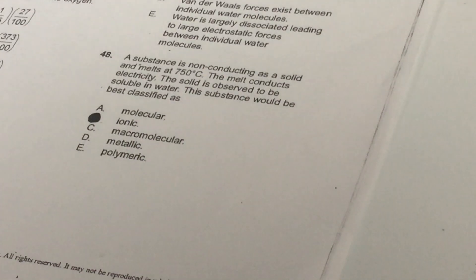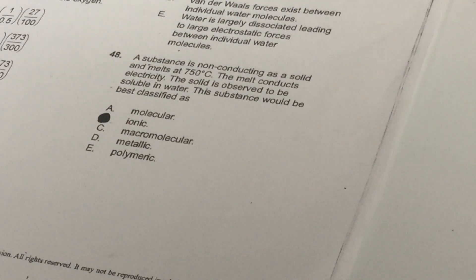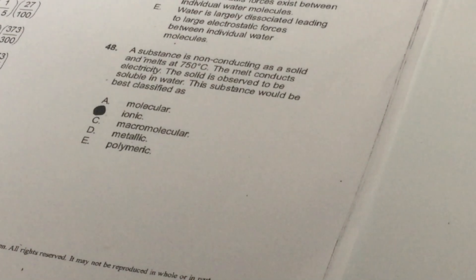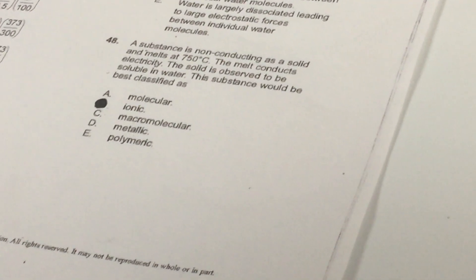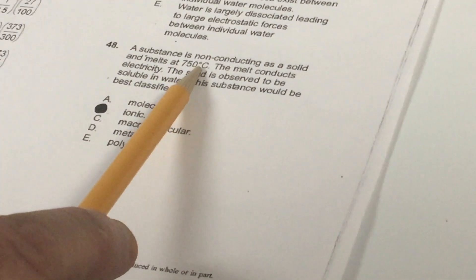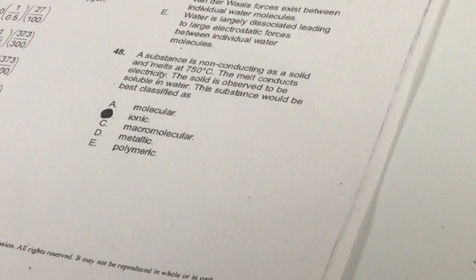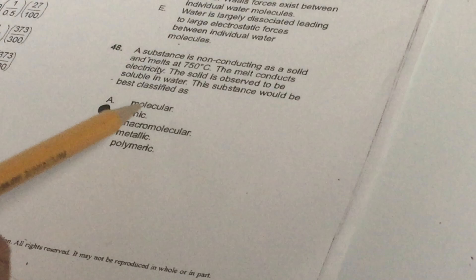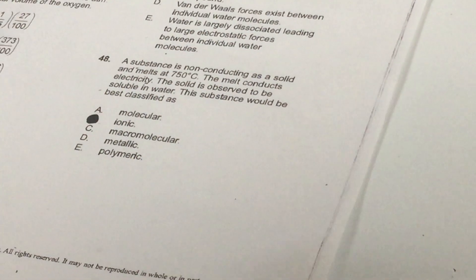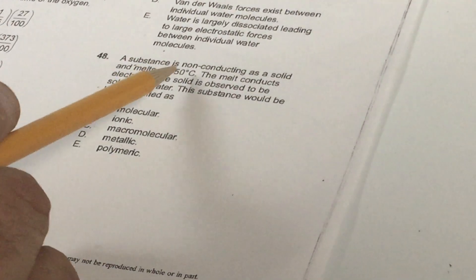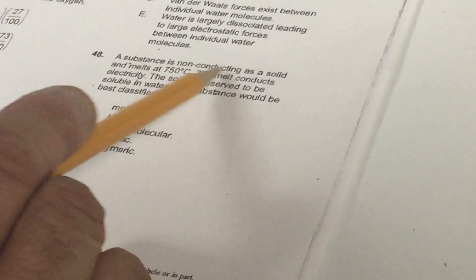In 48, it says that a substance is non-conducting as a solid and melts at 750 Celsius. The melt conducts electricity and the solid is observed to be water soluble. This is classified as choice B, an ionic compound. Ionic compounds have very high melting points, sometimes into the thousands, and they only conduct electricity when in the molten or aqueous state. A metallic compound, we know metals are conducting, so that's out.